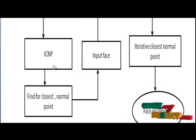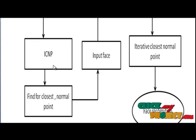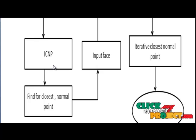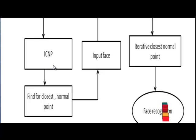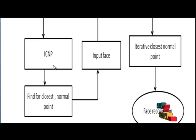Face recognition performance is evaluated using the proposed method. We reproduce the analysis using LDA — linear discriminant analysis. Many DA methods have recently been proposed for face recognition. Finally, we show that the normal vectors of the CNPs provide a higher level of discriminant information than the coordinates of the points.